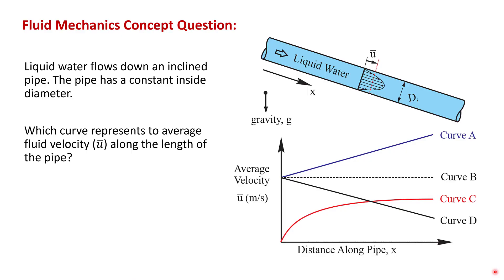This question deals with an important concept from chapter 3. This one's a little embarrassing for me as an instructor, as I'll explain at the end of the video. This question shows liquid water flowing down a steeply inclined pipe. The pipe is completely filled with water and has a constant inside diameter. The question asks which curve represents the average velocity u-bar along the length of the pipe.